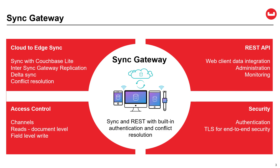Sync Gateway also provides REST APIs that allow web clients to access sync data, as well as administrative APIs for working with deployment configurations and monitoring performance and event statistics. Access control is fine-grained, with channels for data segregation, read access control at the document level, and write access control at the field level.